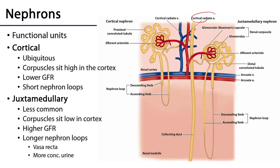The renal corpuscle — the capsule plus the glomerulus — is the proximal part of a nephron. Then there is a proximal convoluted tubule with convoluted and straight parts. This feeds into the nephron loop, which dives into the medulla and comes back up into the cortex into the distal convoluted tubule, which feeds into collecting ducts. At the end of the collecting ducts there is a renal papilla, and at that point the filtrate is urine.